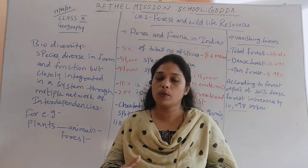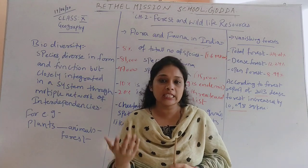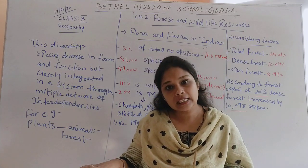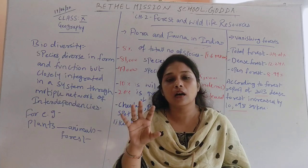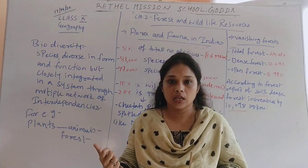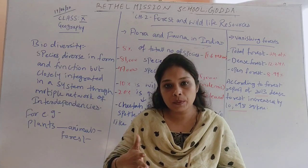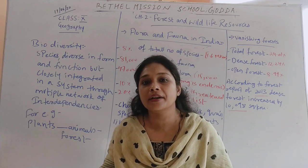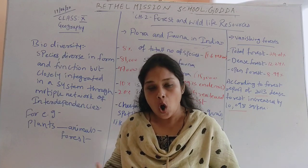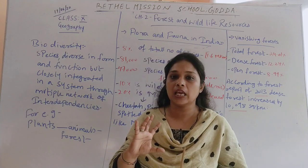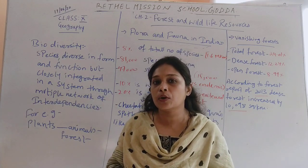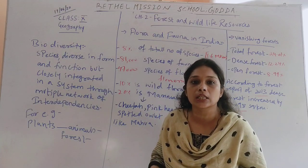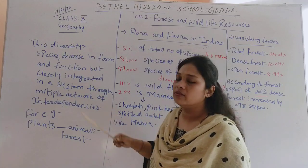When we talk about human beings, plants and animals — all these three resources, that is human resource, animal resource, and plant resources — combined together, they are known as an ecological system, or you can say biodiversity.